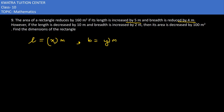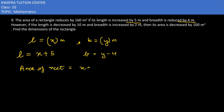Now, the length is increased by 5 so it becomes x plus 5, and the breadth changes to y minus 4. The area of the rectangle is reduced by 160 square meters. So the new area is (x + 5)(y - 4), which equals the original area xy minus 160.